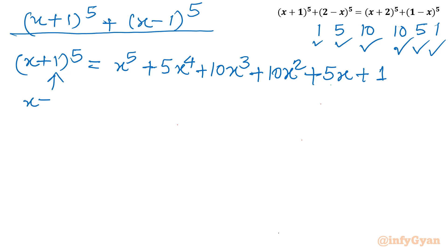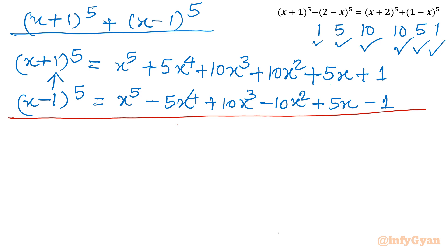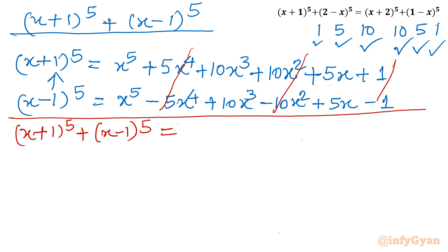Now for (x - 1)^5: it will be x^5, then minus 5x^4 (since (-1)^1 = -1), then plus 10x^3, minus 10x^2, then plus 5x, then minus 1, with signs alternating. Adding (x + 1)^5 and (x - 1)^5, the odd-powered terms in 1 cancel, leaving 2x^5 + 10x^3 + 5x, multiplied by 2.